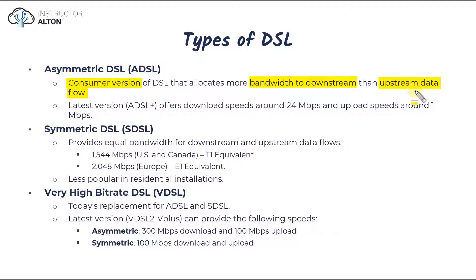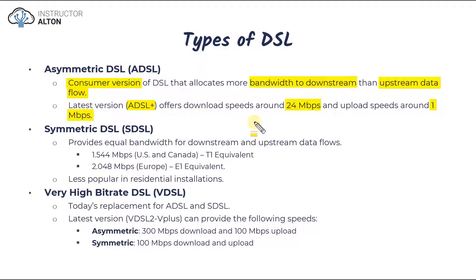They allocate more to downloading because if you think about residential users, 90% of us are going to be downloading much more than uploading — watching YouTube, Netflix, or browsing the internet. A majority of the data coming to us is downstream and we're not sending a lot upstream. For example, one of the latest versions, ADSL+, offers download speeds of around 24 megabits per second and upload speeds of only around 1 megabit per second.